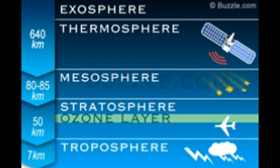Earth's atmosphere is thicker at the innermost radius around the Earth and starts becoming thinner towards outer space. It is composed of five layers, where each layer plays a significant role in supporting life on Earth. The outermost layer marks the Earth's territory from outer space. The proportions of gases and their temperatures vary across layers, making the composition of each layer different from the other.